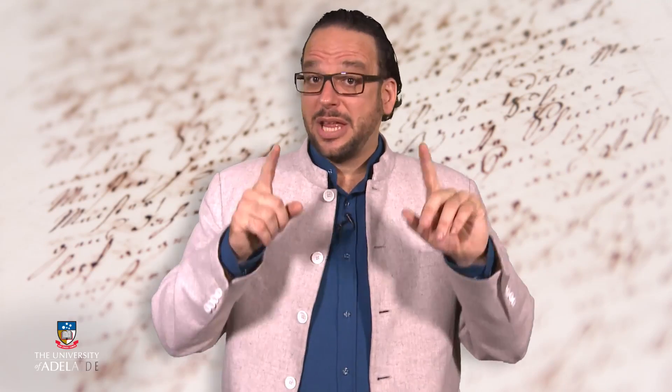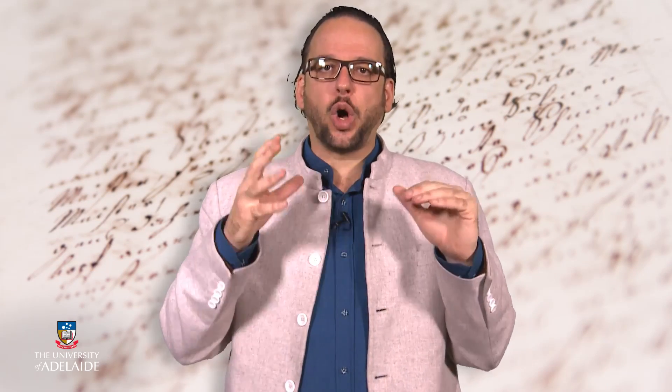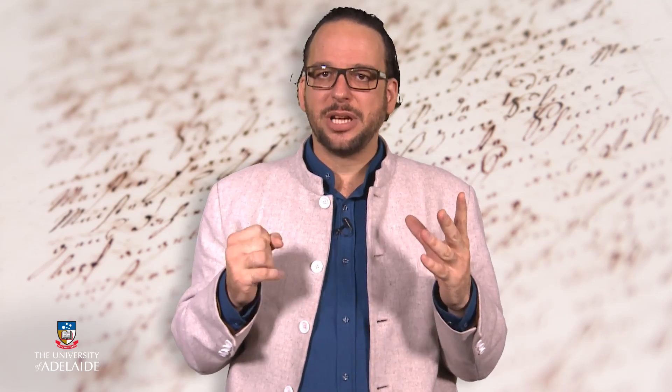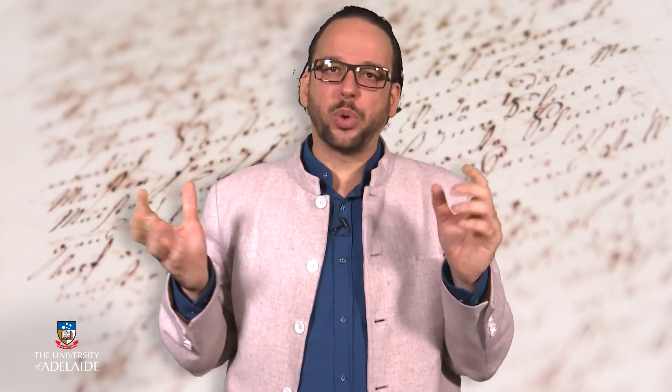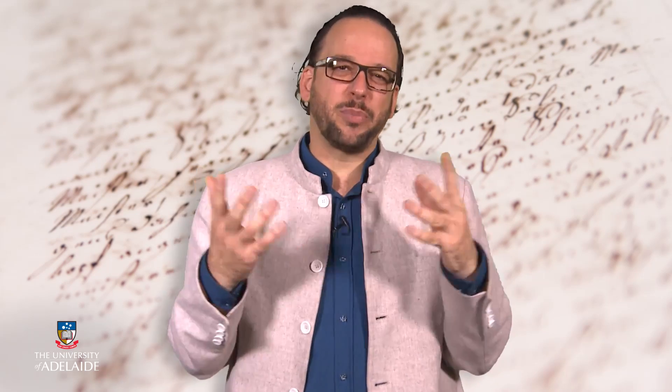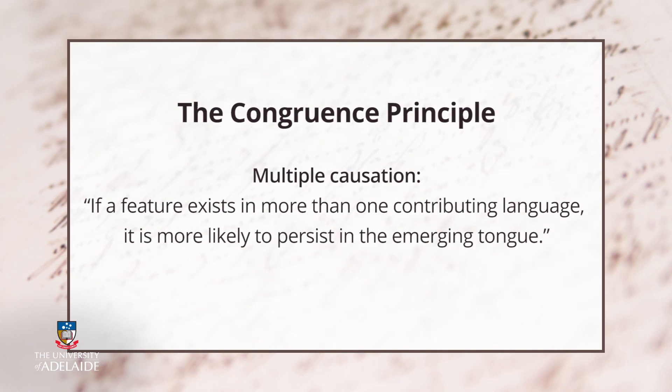I would like to propose that due to the ubiquitous, omnipresent phenomenon of multiple causation, the revival of a no longer spoken language is unlikely without cross-fertilization from the revivalists' mother tongues. Thus, revival efforts result in a language with a hybridic, genetic, and typological character. Multiple causation is manifested in the congruence principle, according to which the more contributing languages a linguistic feature exists in, the more likely it is to persist in the emerging tongue.